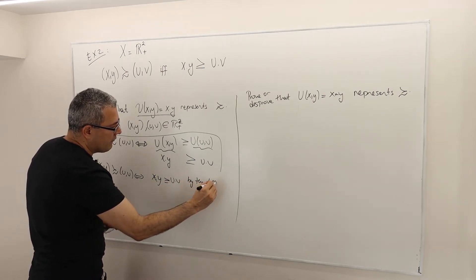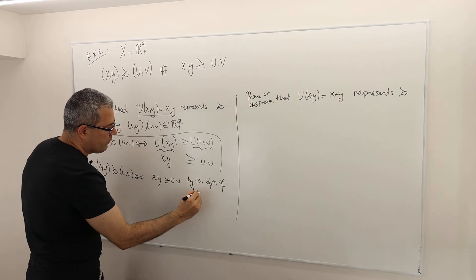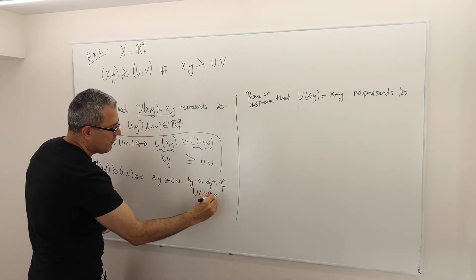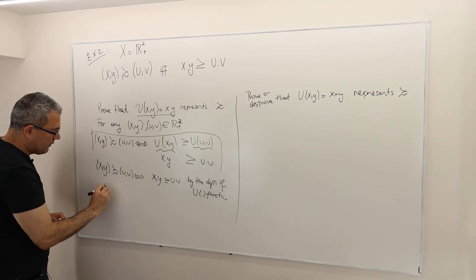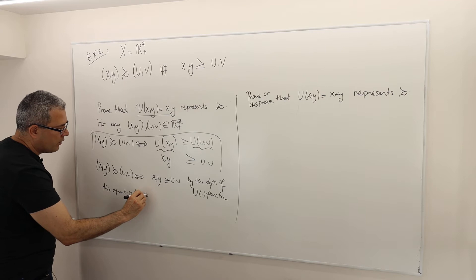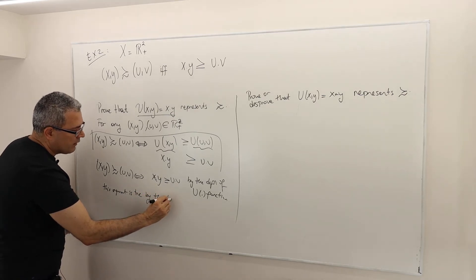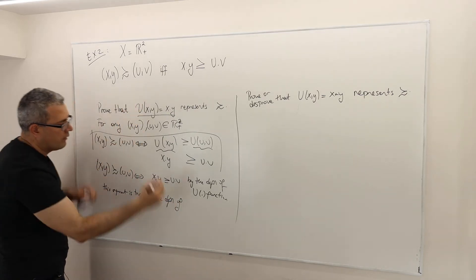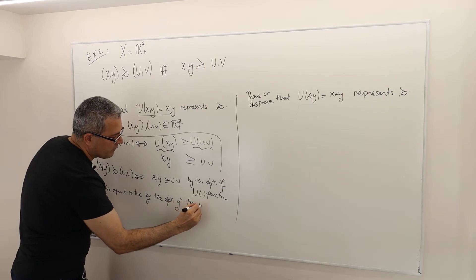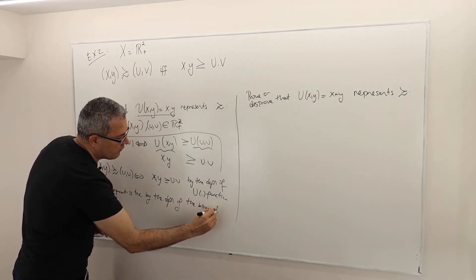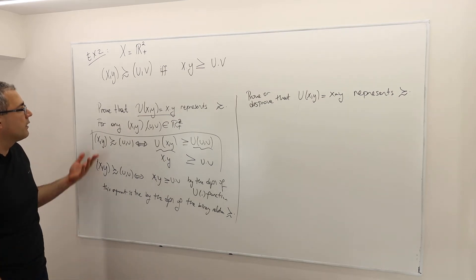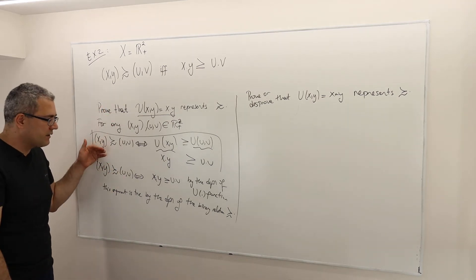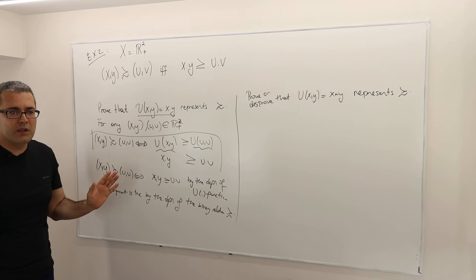We know that this argument is true by the definition of the binary relation, at least as good as. Therefore, this utility function represents this binary relation. As simple as that.